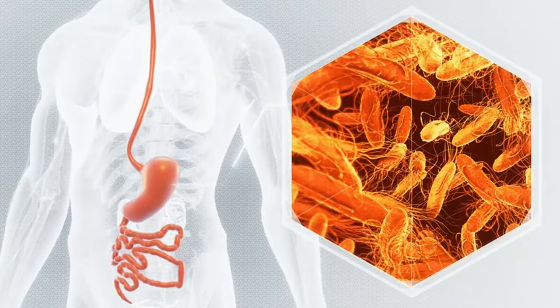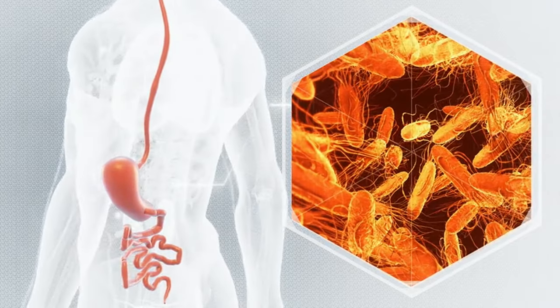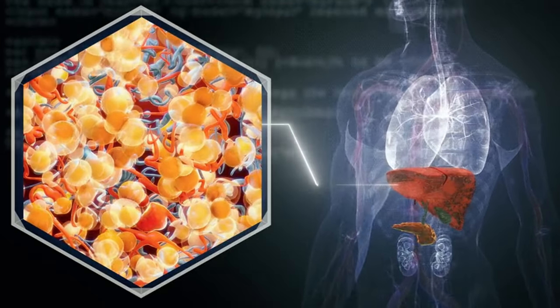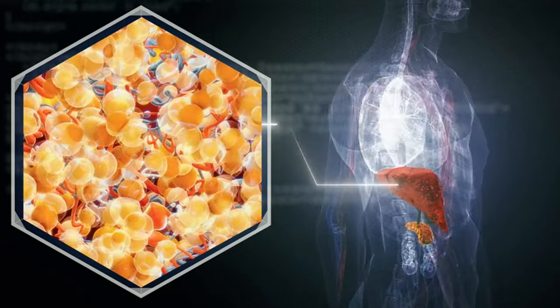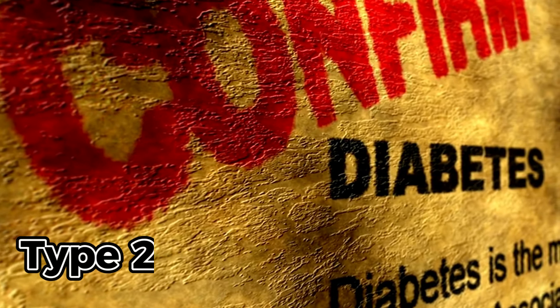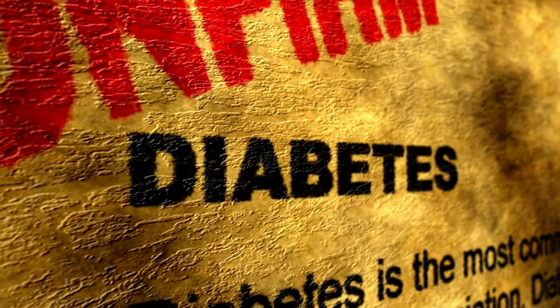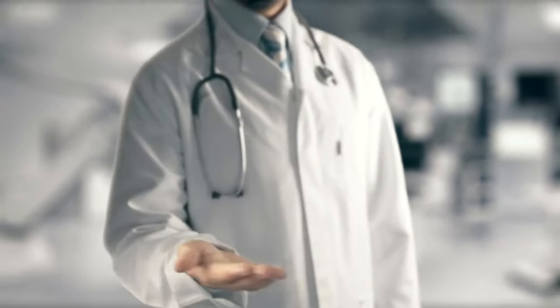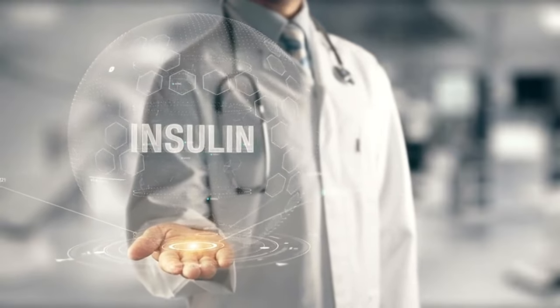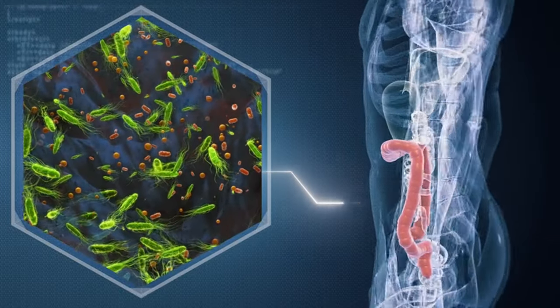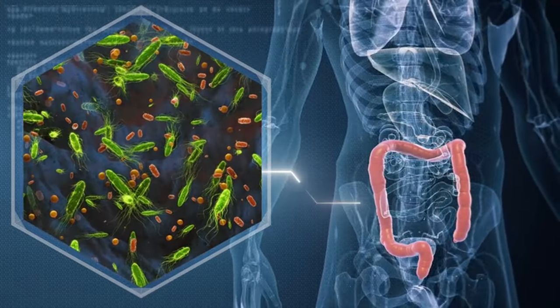Beyond the liver, NAFLD casts its influence on the cardiovascular system. Metabolic derangements associated with NAFLD — such as insulin resistance, dyslipidemia, and inflammation — elevate the risk of cardiovascular disease, heart attacks, strokes, and peripheral vascular disease. In addition, NAFLD and type 2 diabetes intertwine, fueling each other's progression. Insulin resistance acts as a catalyst for metabolic dysfunction, exacerbating liver inflammation and driving progression towards advanced NAFLD, perpetuating a vicious cycle of metabolic complications.